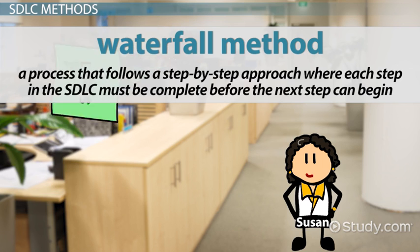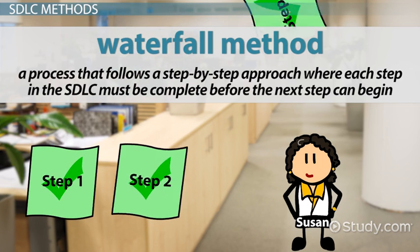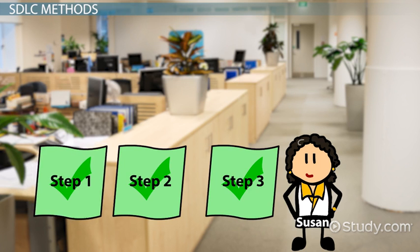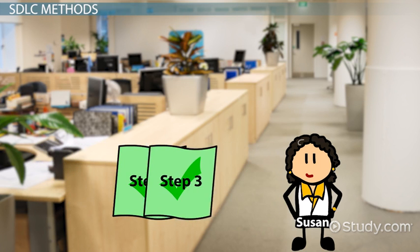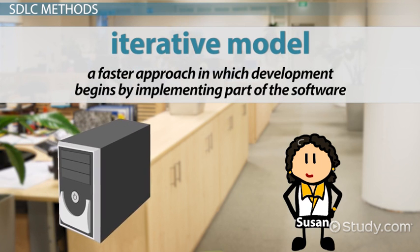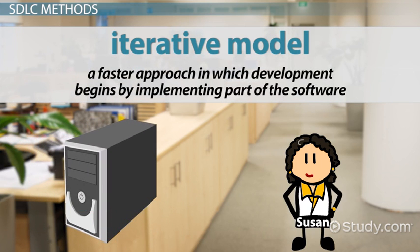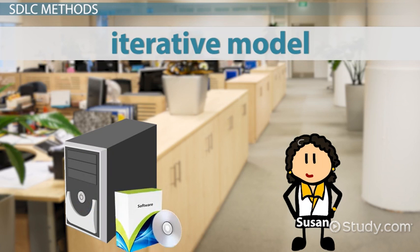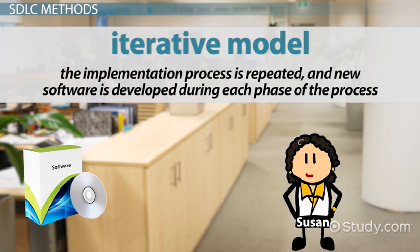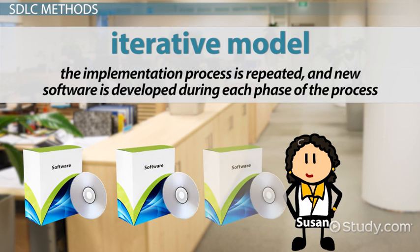Susan learns that the Waterfall method is a process that follows a step-by-step approach, where each step in the SDLC must be complete before the next step can begin. The deliverable from each step is necessary to complete subsequent steps in the Waterfall method. The Iterative model is a faster approach, in which development begins by implementing part of the software. Full implementation and specifications are not used in the Iterative model; instead, the implementation process is repeated, and new software is developed during each phase of the process.